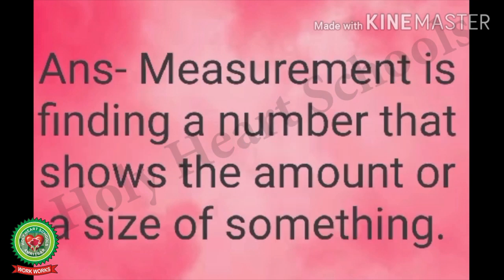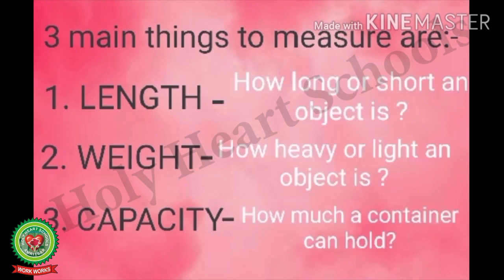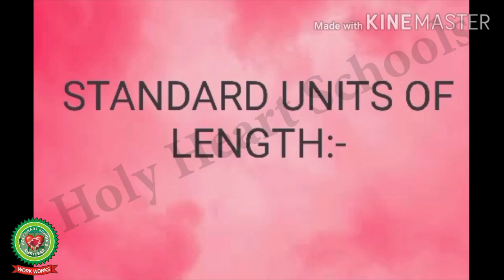Measurement is finding a number that shows the amount or size of something. We measure three main things: length, weight, and capacity. In length we will see how long or short an object is; in weight, how heavy or light an object is; and in capacity, how much a container can hold. We use capacity for liquids only.